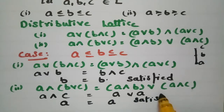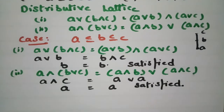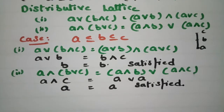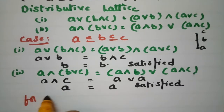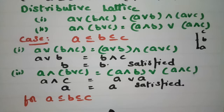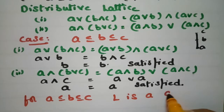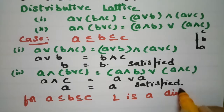Both conditions are satisfied. Therefore, for Case 1, where A ≤ B ≤ C, we say that L is a distributive lattice.